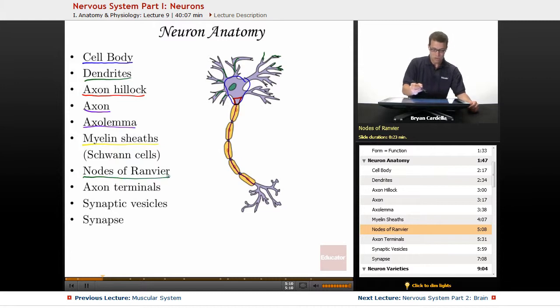Nodes of Ranvier are right here. They're the parts of the axon that are exposed. So right here, you've got a Schwann cell covering that part of the axon. But in between these two Schwann cells, there's an exposed axon section. That's a node of Ranvier or Ranviere, depending on who you ask.